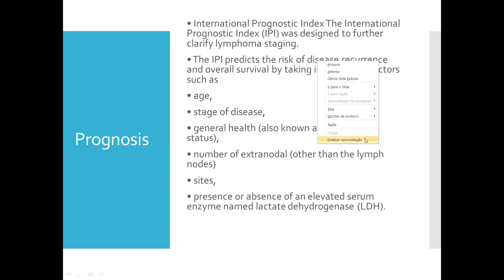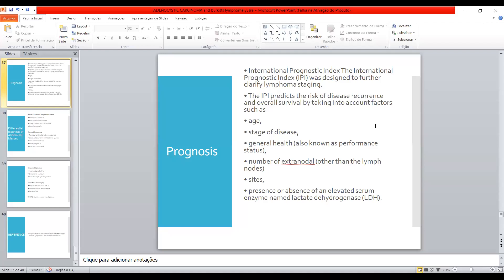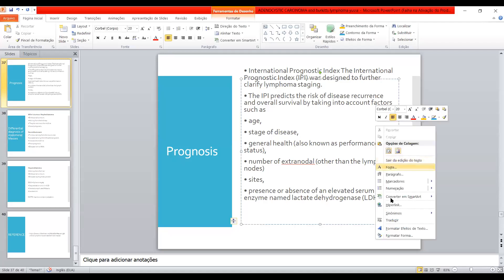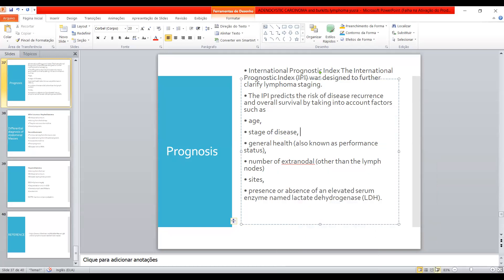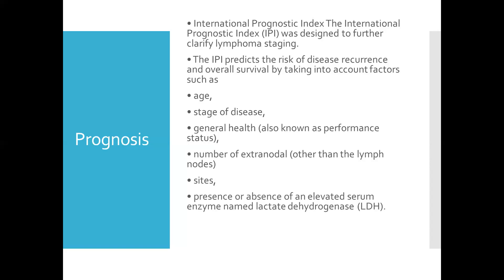For prognosis, the International Prognostic Index was designed to further classify lymphoma staging. The IPI predicts the risk of disease recurrence and overall survival by taking into account factors such as age, stage of disease, general health, number of extranodal sites, and presence or absence of an elevated serum lactate dehydrogenase.